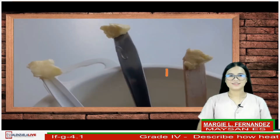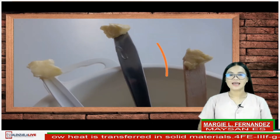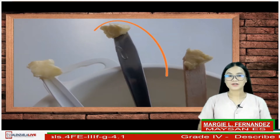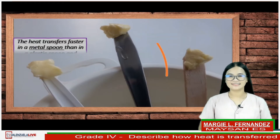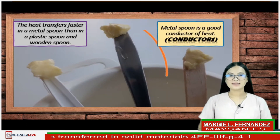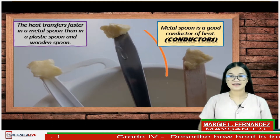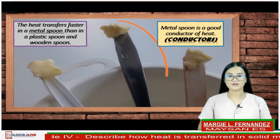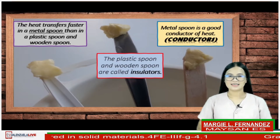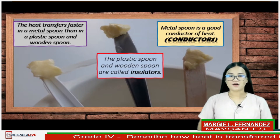Let us find out if your answer is correct. If your answer is the metal spoon, you are intelligent! Heat transfers faster in a metal spoon than in a plastic spoon or wooden spoon. As proof, the butter on the tip of the metal spoon's handle melts quicker than the butter on the plastic and wooden spoon handles. Therefore, metal spoons and all metal objects are good conductors of heat — they are called conductors. That is also why we use metals as cooking utensils. The plastic spoon and wooden spoon are called insulators.